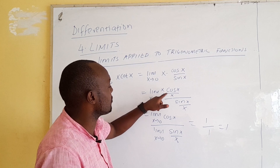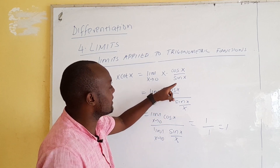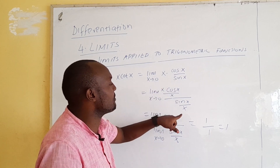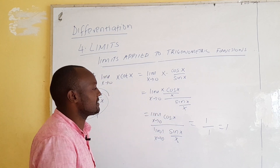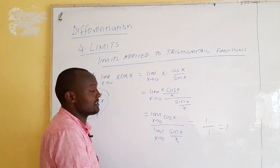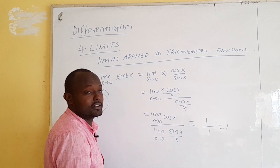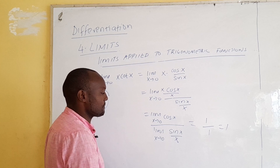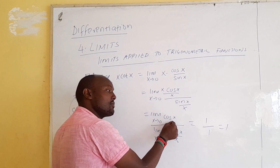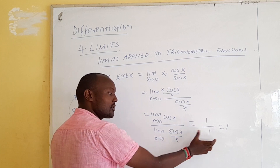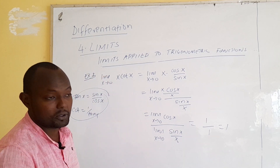To summarize Example 3: we divided numerator x·cos(x) by x to get cos(x), and divided the denominator sin(x) by x to get sin(x)/x. Then we separated the limit using the quotient rule — limit of cos(x) equals 1, and limit of sin(x)/x equals 1, giving a final answer of 1.